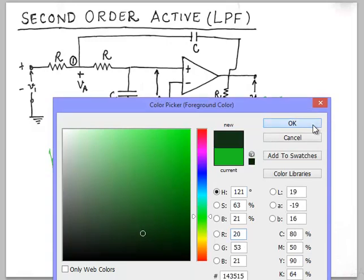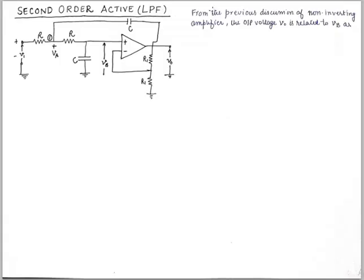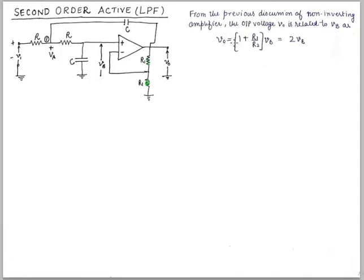So having said that, we will go to the previous discussion of non-inverting amplifier. The output voltage V0 is related to Vb as this relation if we consider R1 and this R1 to be equal. So if these two resistances are kept equal, then V0 comes out to be equal to twice of Vb. This has previously been established.